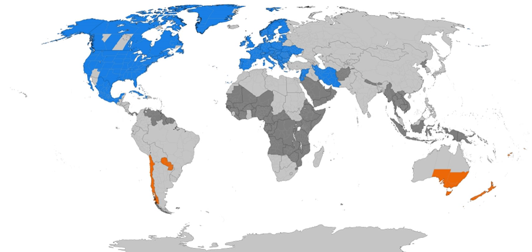Typically, regions that use Daylight Saving Time adjust clocks forward one hour close to the start of spring and adjust them backward in the autumn. In effect, DST causes a lost hour of sleep in the spring and an extra hour of sleep in the fall.